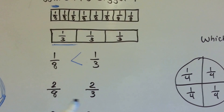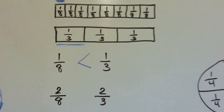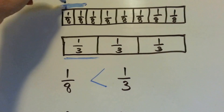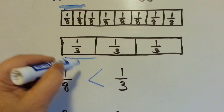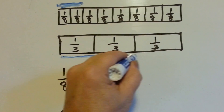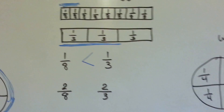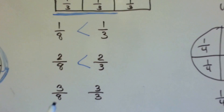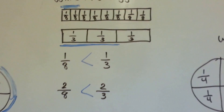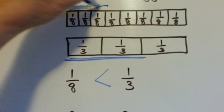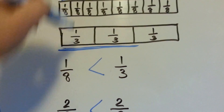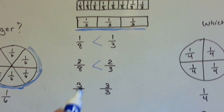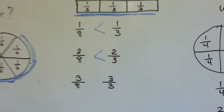Now which is bigger — 2 eighths or 2 thirds? That's 2 eighths. Here's 2 thirds. 2 thirds is much bigger, isn't it? Now which is bigger — 3 eighths or 3 thirds? Let's go to 3 eighths. But 3 thirds is the whole thing. So 3 thirds is bigger than 3 eighths.